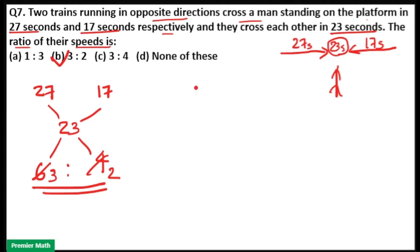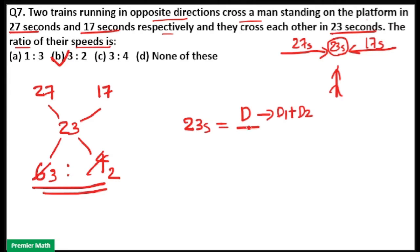If you want to solve this question using the usual method: time to cross each other is equal to 23 seconds. Using time equals distance divided by speed, the distance here is equal to the distance traveled by both trains combined. The relative speed, since both trains are traveling in opposite directions, is equal to S1 plus S2.